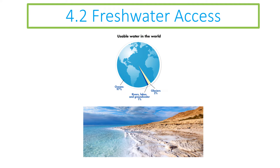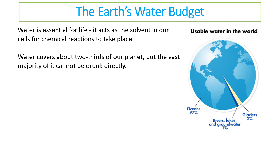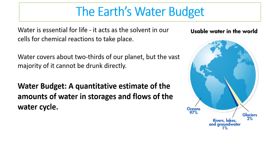Hello, welcome to this ESS revision video for module 4.2. Today we're looking at freshwater access and the impacts of humans on our access to fresh water. As previously discussed in the last video, the freshwater budget is the quantitative estimate of the amounts of water in storage and flows of the water cycle.